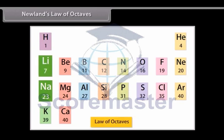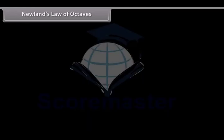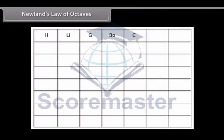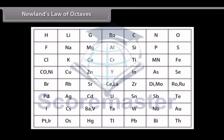This is called the Law of Octaves. However, all elements could be arranged in this order only till calcium, even though there were more than 60 elements available at that time.